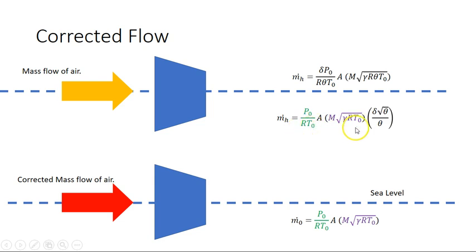And we can see that this is essentially the mass flow at sea level. So I want to rearrange that and so I want the mass flow at sea level to be on one side, so there it is. And I know that the square root of θ times θ is square root of θ cubed.